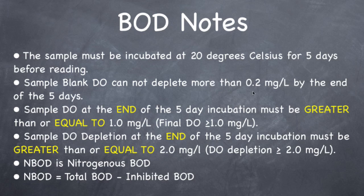They'll give you the sample blank's initial DO and final DO. And if it's depleted by more than 0.2, the entire test is invalid and you cannot perform the test.